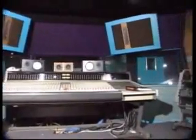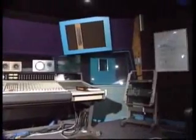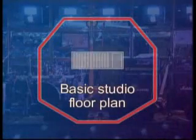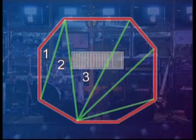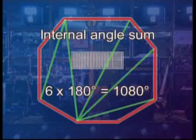As an example, the internal angle sum of this studio control room can be calculated by dividing its floor plan into triangles. We know that the angle sum of a triangle is 180 degrees. This polygon can be split into six triangles, and six times 180 equals 1080 degrees.